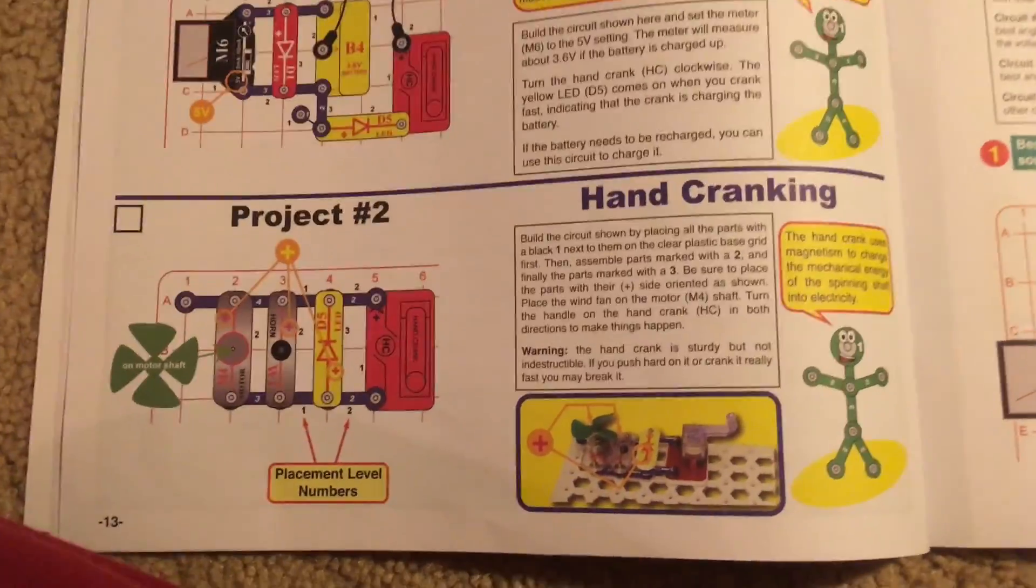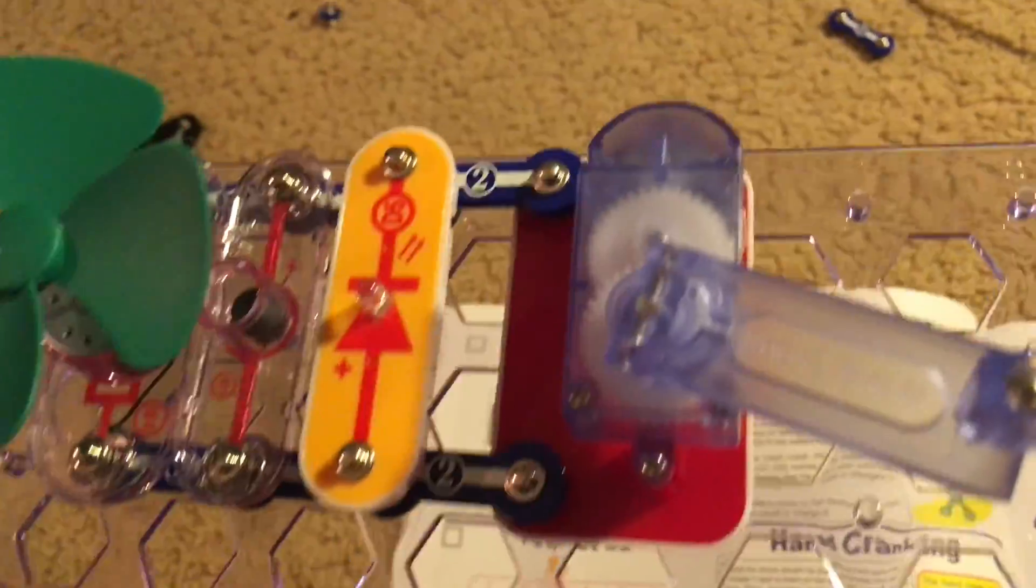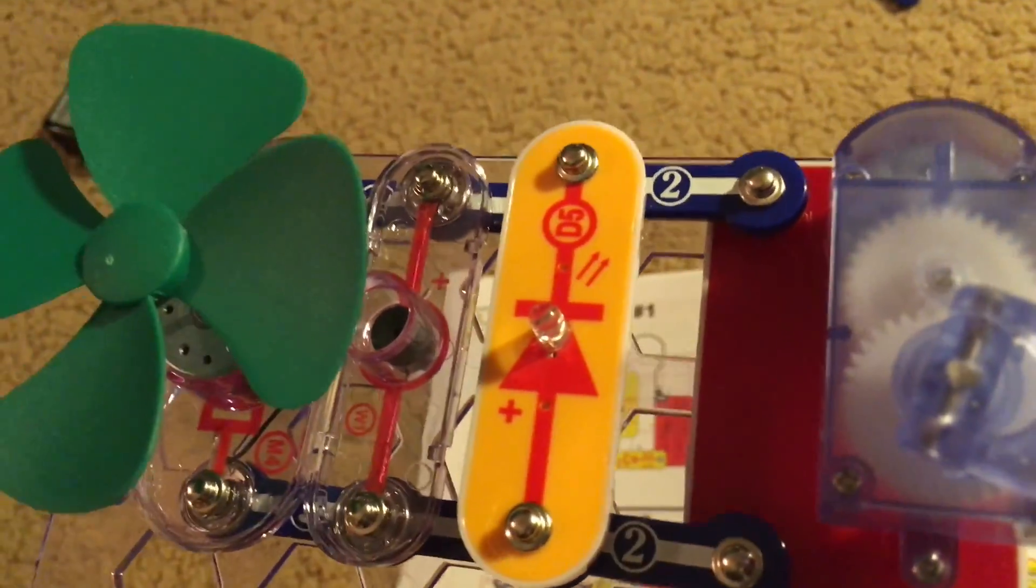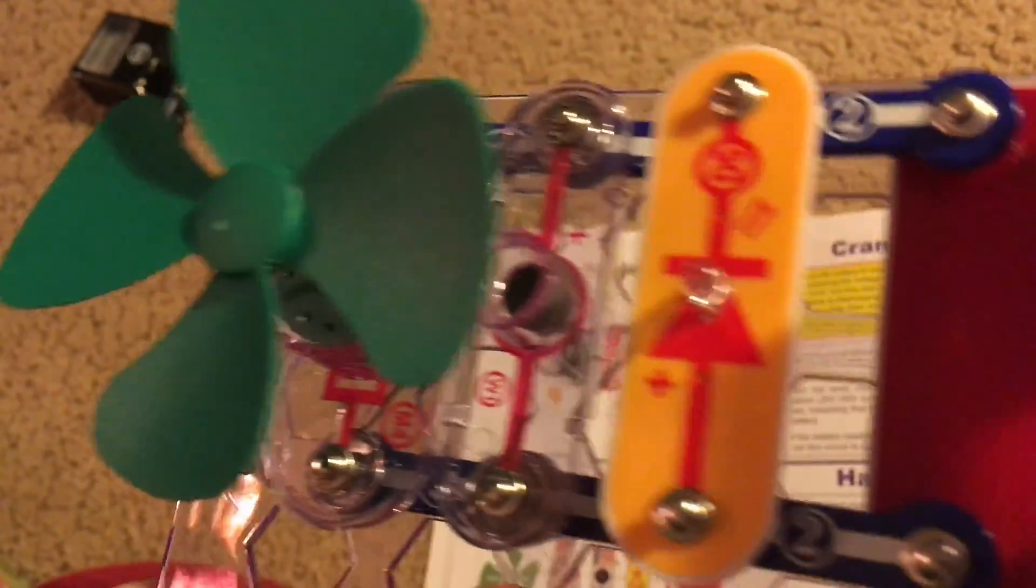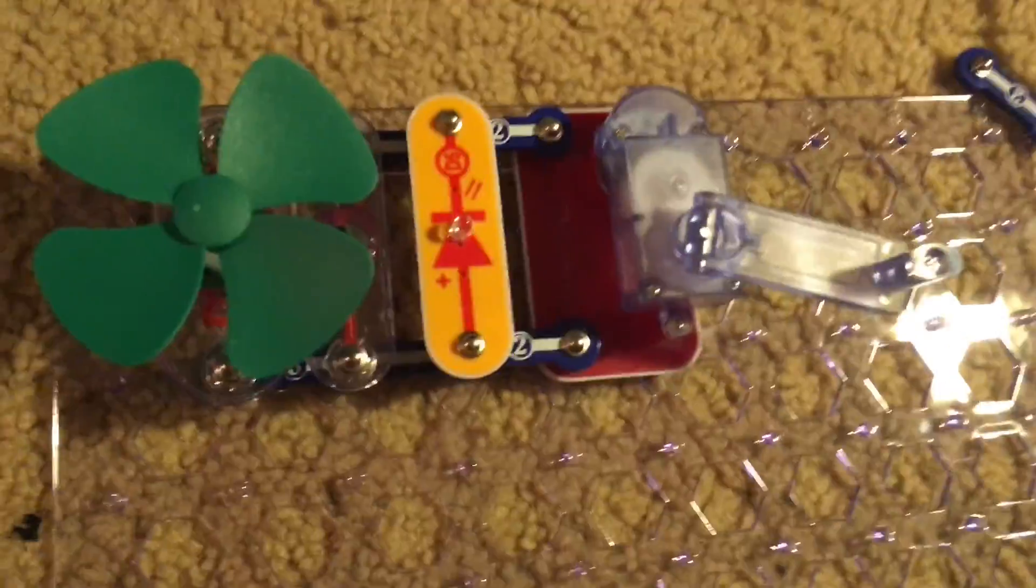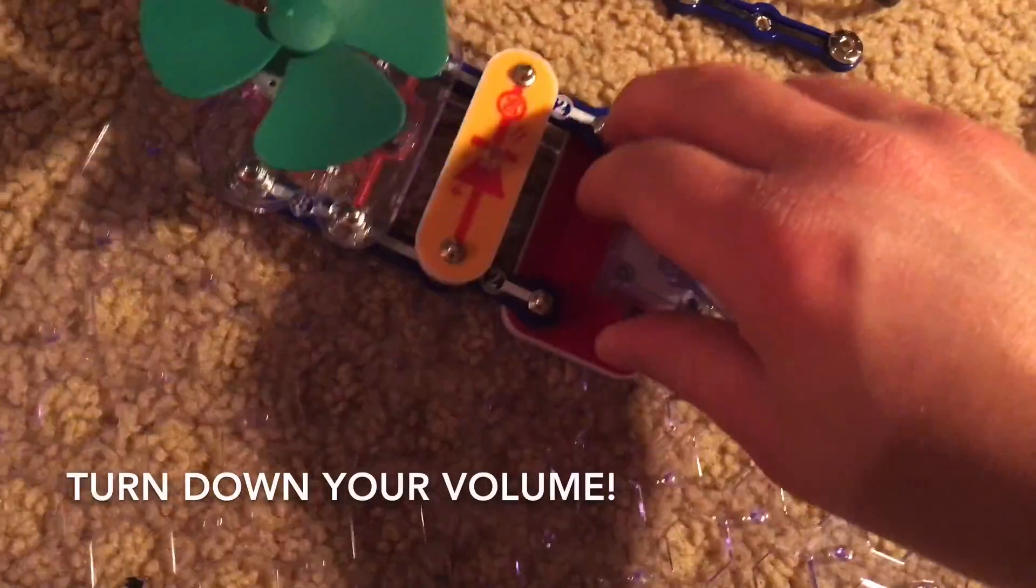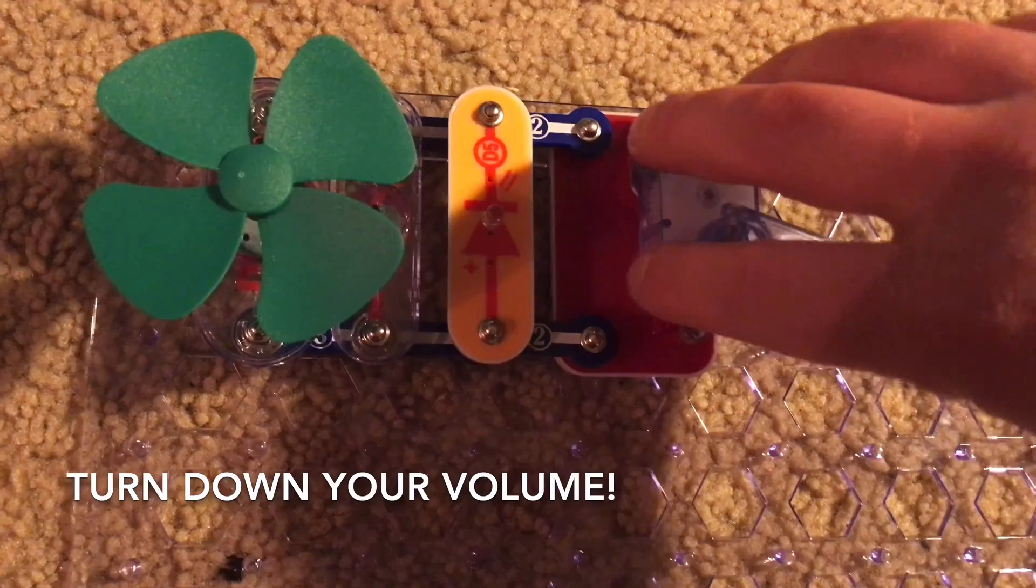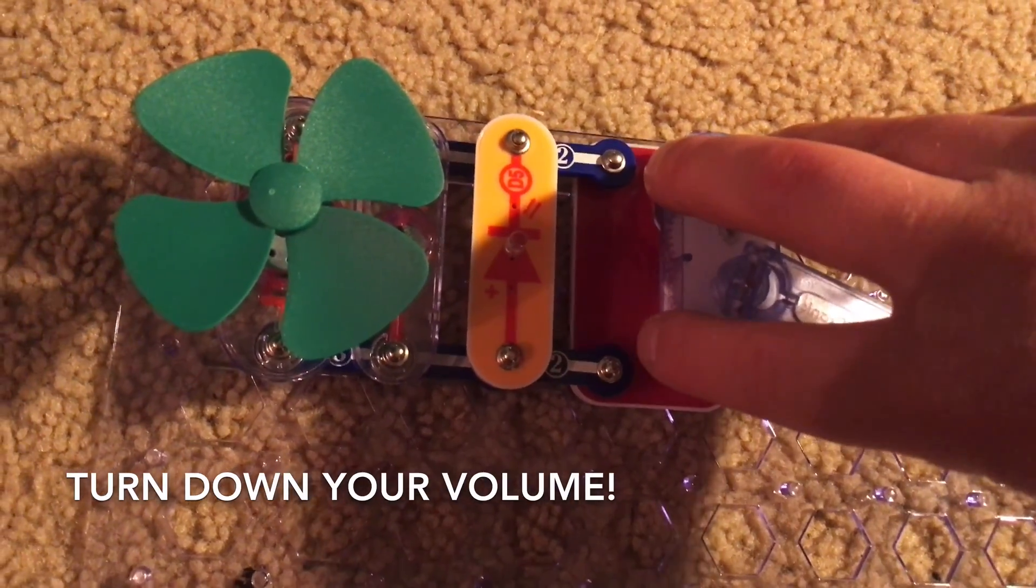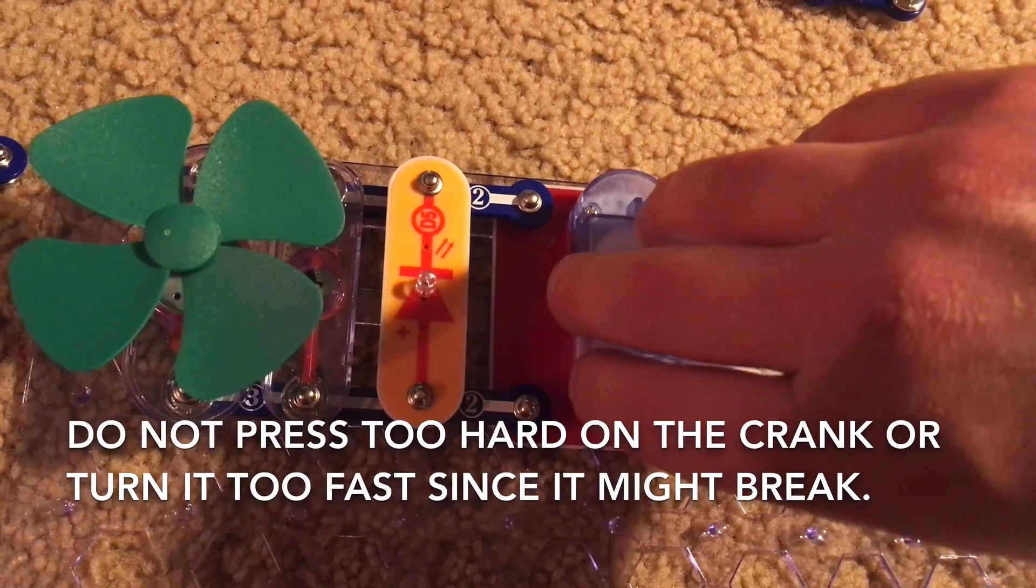Hand cranking. We will build this circuit which includes the hand crank, yellow LED, horn, and motor which has the wind fan mounted on. We will turn the crank clockwise and now be aware that this might be a little bit loud because there is a horn in this circuit. I am going to turn the crank right now.